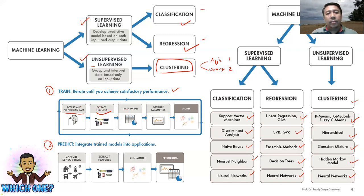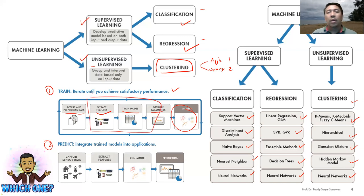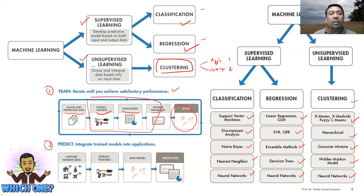After feature extraction, you train the models and optimize parameters to produce the final model. In deep learning, classification and feature extraction are done automatically. Traditional machine learning uses handcrafted features, while deep learning tries to find unique representations or characteristics of signals or data automatically.